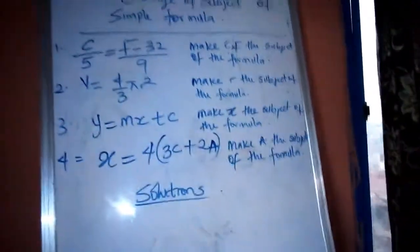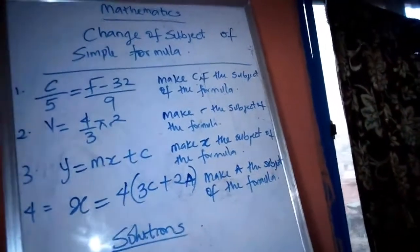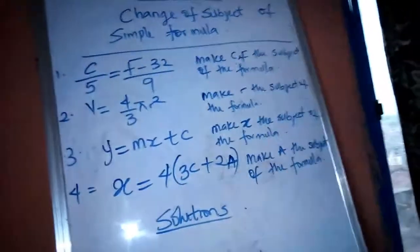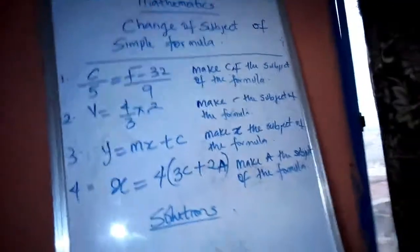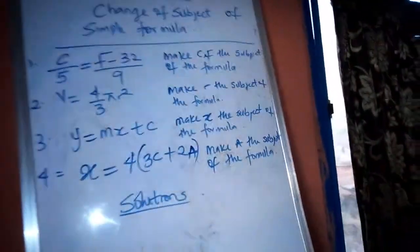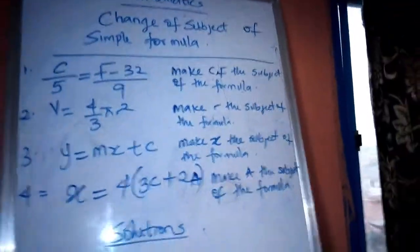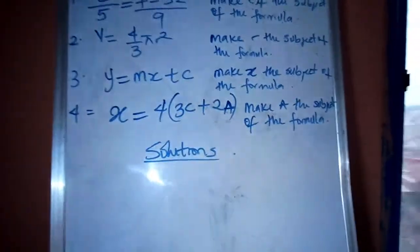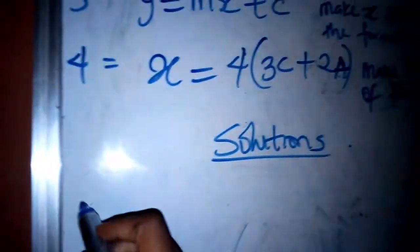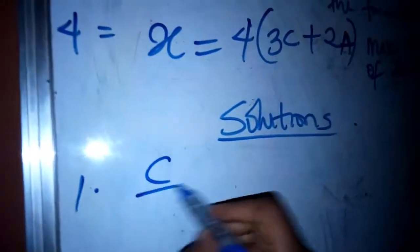Question one says C over 5 equals F minus 32 over 9, and it says you should make C and F the subject of the formula. We are going to make C the subject of the formula first, before making F the subject. So we start: C over 5 equals F minus 32 over 9.